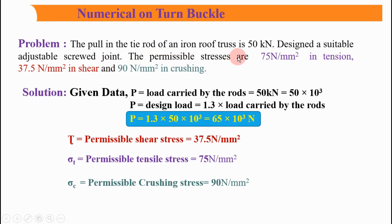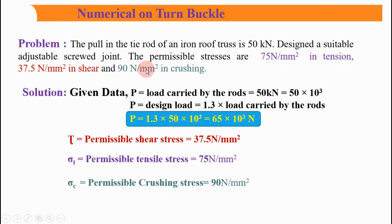The permissible stresses are: σ_t = 75 N/mm² in tension, τ = 37.5 N/mm² in shear, and σ_c = 90 N/mm² in crushing. These are all the given permissible stress values.